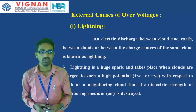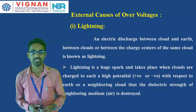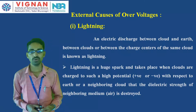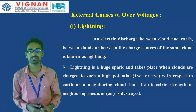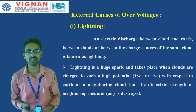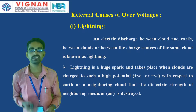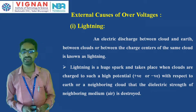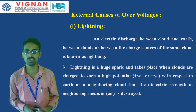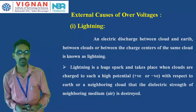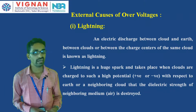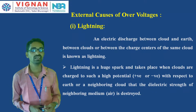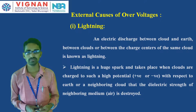Lightning is an external cause of overvoltage. In the last class we saw the internal causes of overvoltages, which are caused by the internal operation of the power system — due to switching operations, arcing grounds, and resonance. Lightning is the only external cause that increases overvoltages. Lightning is nothing but an electric discharge that occurs between clouds, between a cloud and earth, or between the charge centers of the same cloud.